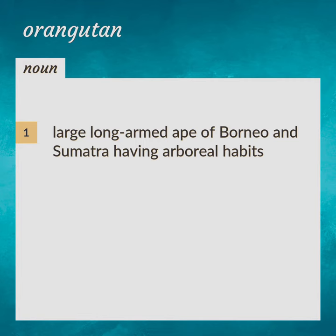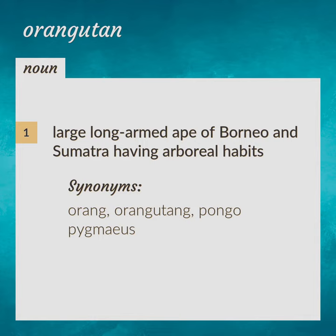Meaning of Orangutan. Large long-armed ape of Borneo and Sumatra having arboreal habits. Also known as Orang or Orangutan, scientific name: Pongo Pygmaeus.